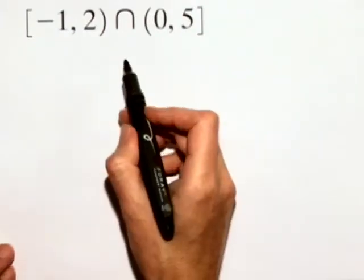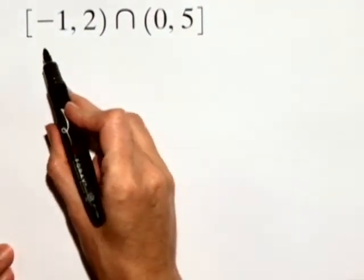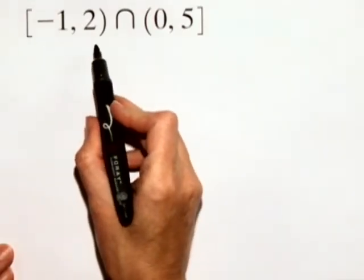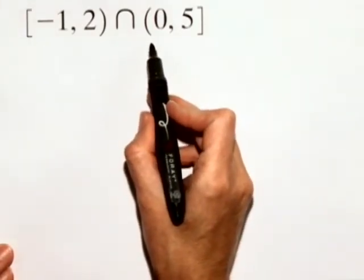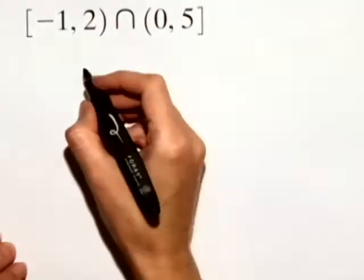In this problem, we'll use a graph to find the intersection of two sets. So we have the intersection of the interval from negative 1 to 2, including negative 1 but not including 2, with the interval from 0 to 5, not including 0 but including 5.